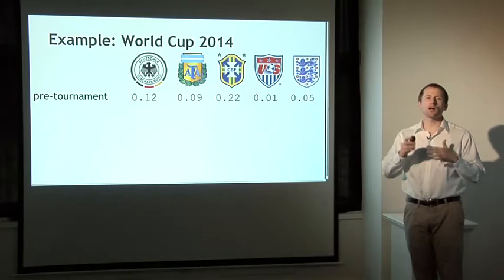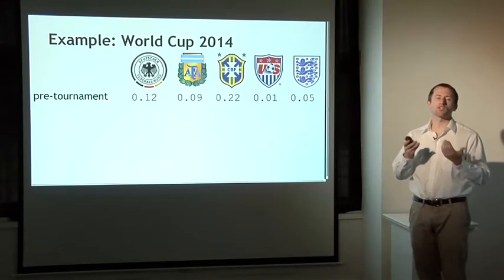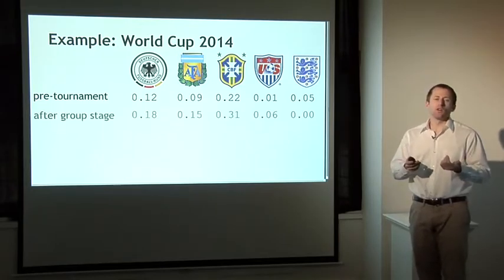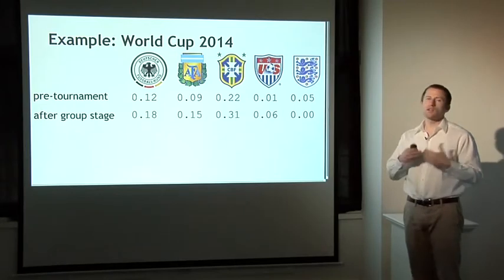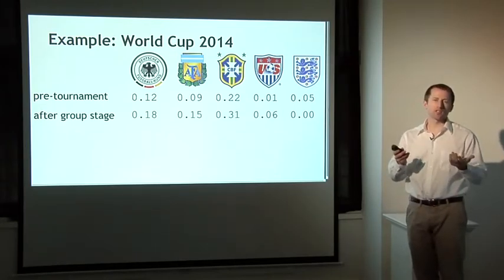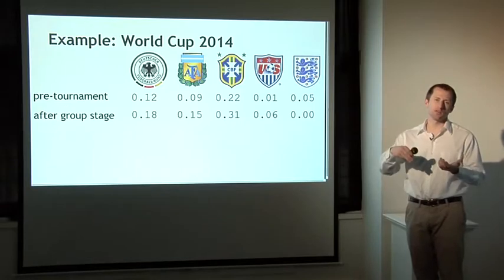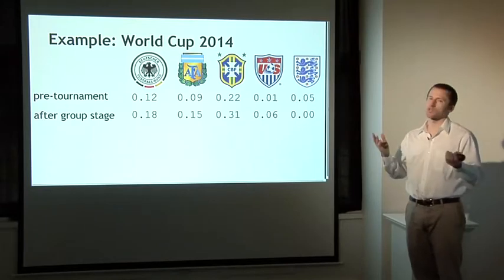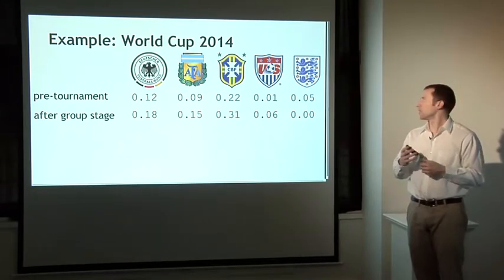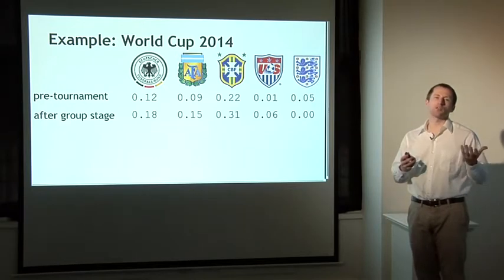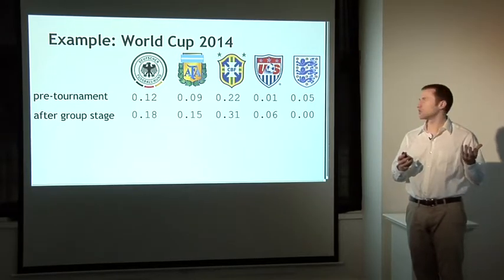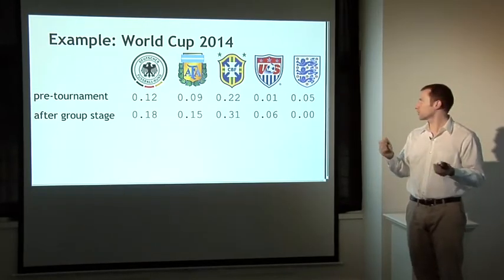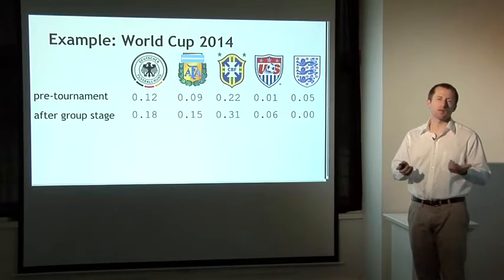As the tournament goes on, these prices are going to fluctuate, reflecting the market's changing belief in how likely each team is to win. After the group stage, England, which was trading at five cents before the tournament started, has now gone to zero — they were knocked out and their shares are now worthless. Whereas the US team, which people thought didn't have a good chance of surviving the group stage, hence the one cent price at the beginning, did fairly well to get out of a tough group and was maybe trading for six cents after that point.